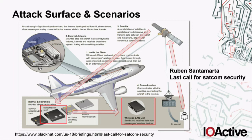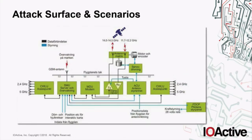I must say that the safety of the aircraft in these attacks is not at risk — it's only the communications. This is one of the architectures where the satellite modem Ruben compromised is connected to the access point running WiNG OS through the SMU server. We're pretty sure it should be possible to reach the access point from the satellite modem and exploit the WiNG OS vulnerabilities.